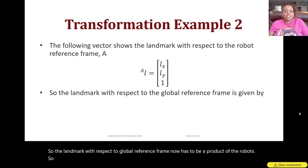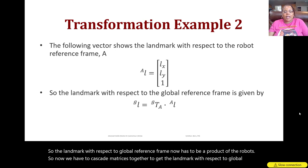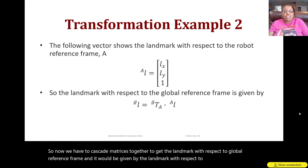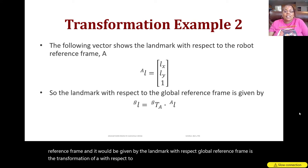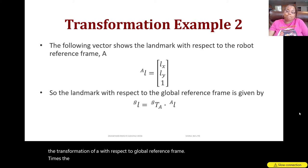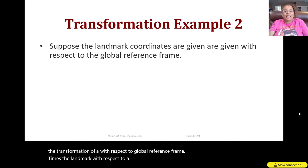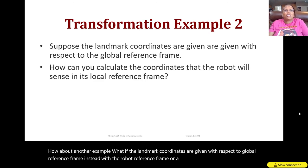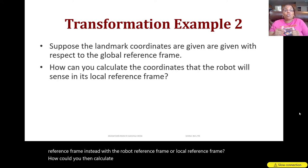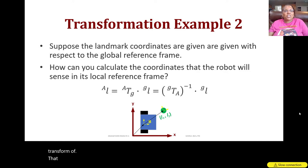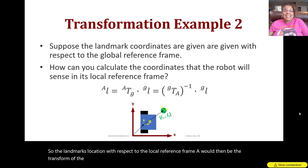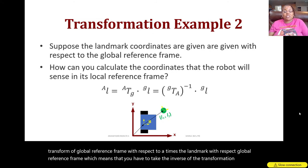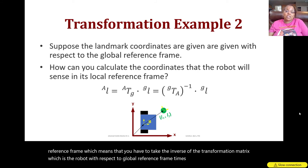To get the landmark's location in the global reference frame, we cascade the matrices: L_G = T(A→G) · L_A. For the reverse problem — if the landmark coordinates are given in the global frame and you want them in the robot's local frame — you take the inverse: L_A = T(A→G)^{−1} · L_G, where T(A→G)^{−1} is the inverse of the transformation matrix of the robot with respect to the global reference frame.